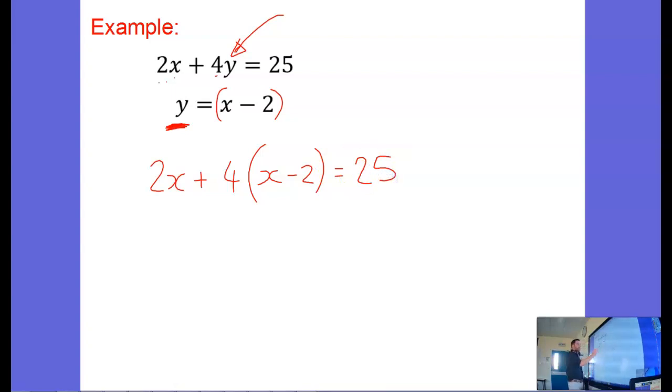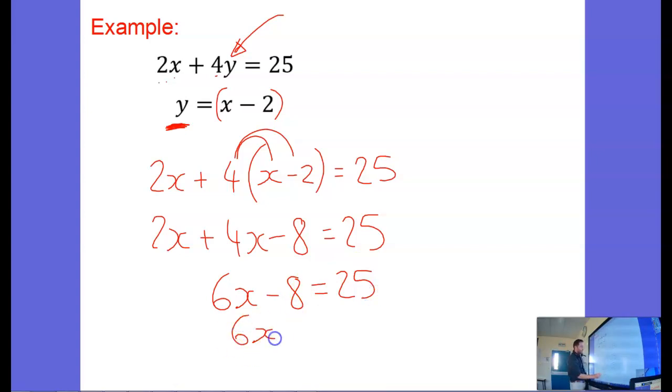Now I'm going to expand the brackets. 4 times x, 4 times minus 2, and I get 2x plus 4x minus 8 equals 25. Simplify that: 6x minus 8 equals 25. And add the 8, 6x equals 33.